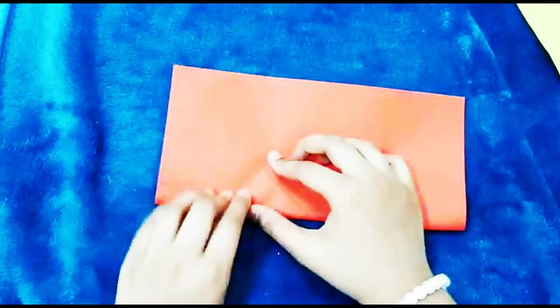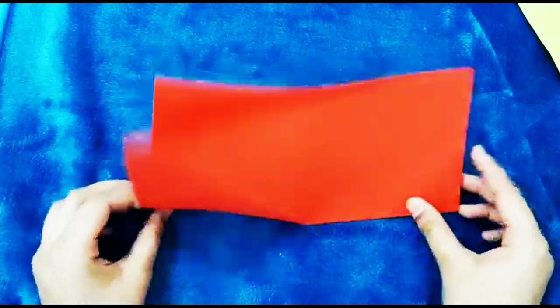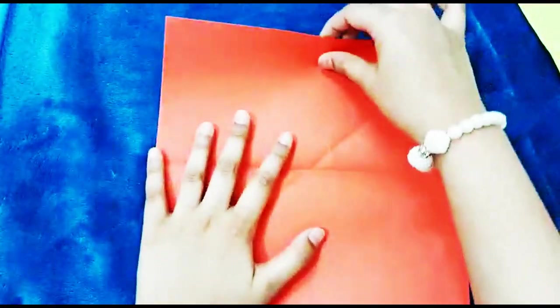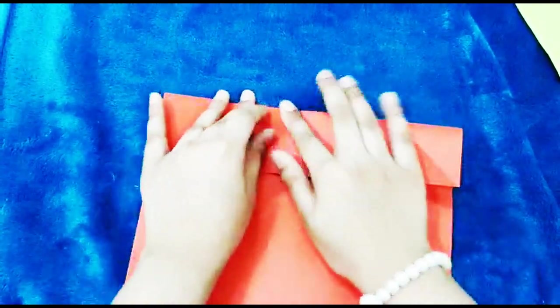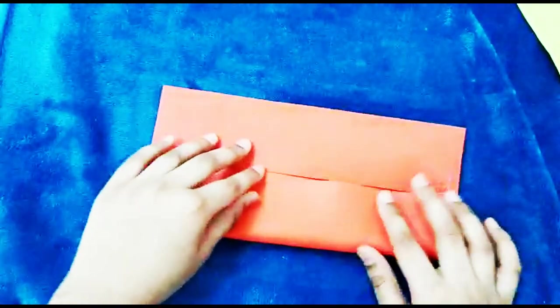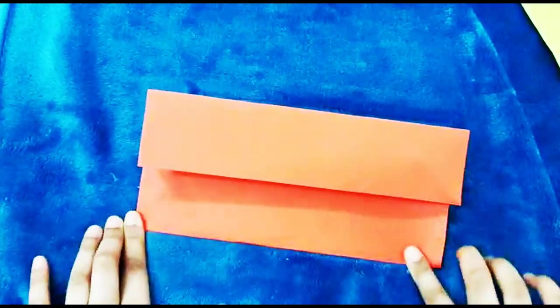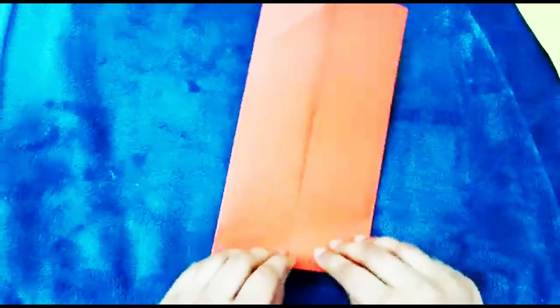Now you're gonna fold the square into half like this and unfold it again. Fold the upwards parts to this line only, like this, and the same way downwards. So you form a shape like this. You open like this.